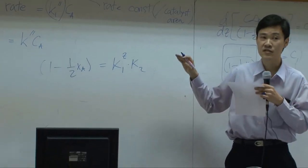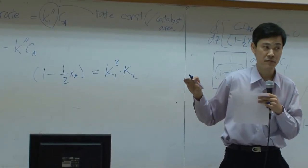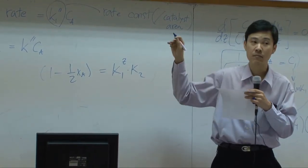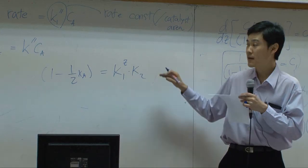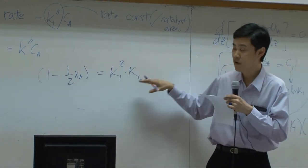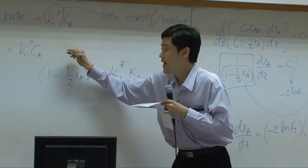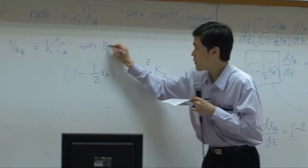The only thing that is changed would be boundary condition. The first boundary condition remains the same - concentration in the bulk is equal to xa0, but concentration on the surface is no longer zero. Now we need to use this as the second boundary condition.